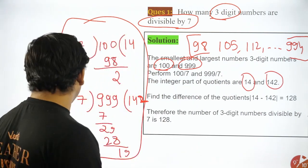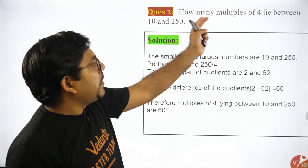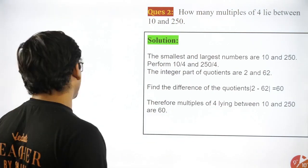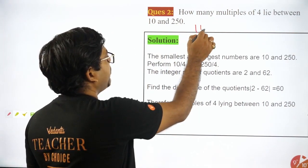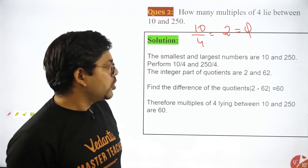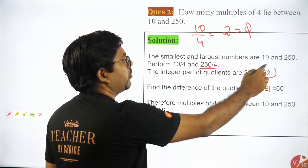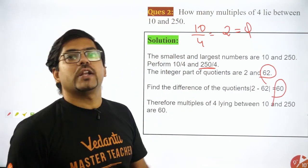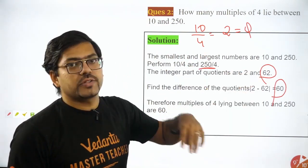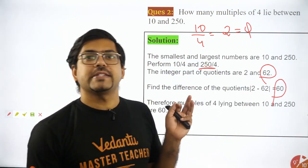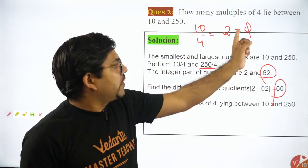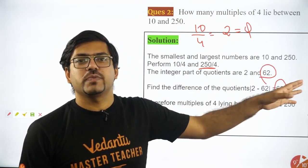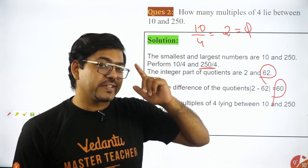Let me show you a few more examples. Say for example you don't get a three-digit number but it is written: how many multiples of 4 lie between 10 and 250? They have given specific numbers — that is also fine. Just divide 10 by 4 and divide 250 by 4. Dividing 10 by 4 gives quotient 2; dividing 250 by 4 gives quotient 62. So 62 minus 2 equals 60 — that's the answer. Even if the number were 12 instead of 10, the answer would be 62 minus 3 equals 59. Every time it's the same methodology: divide both boundary numbers, subtract the quotients.